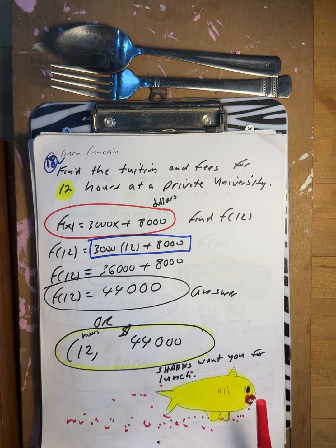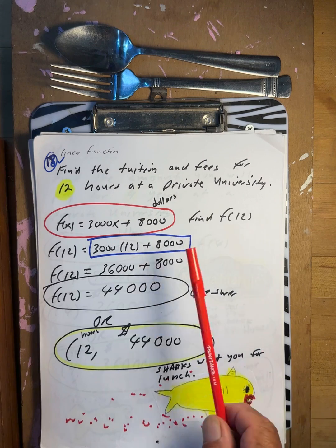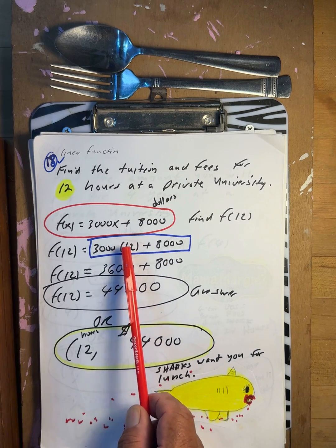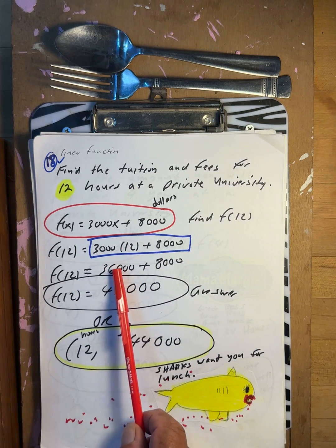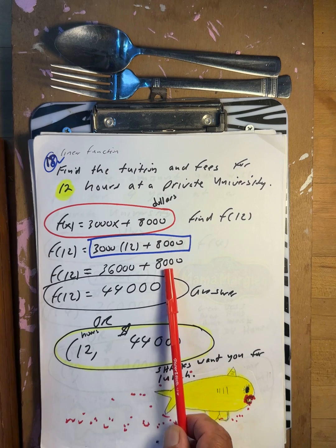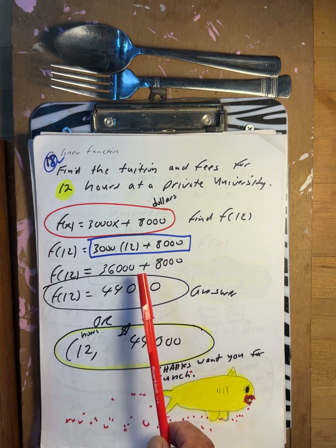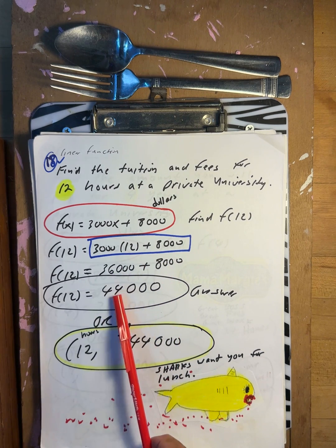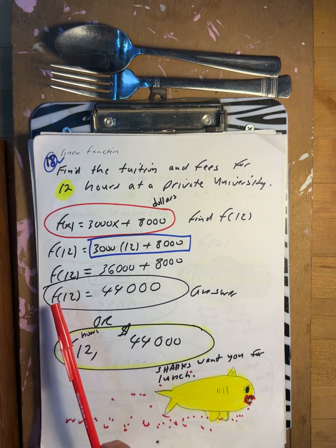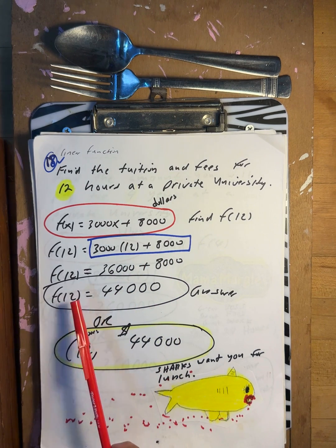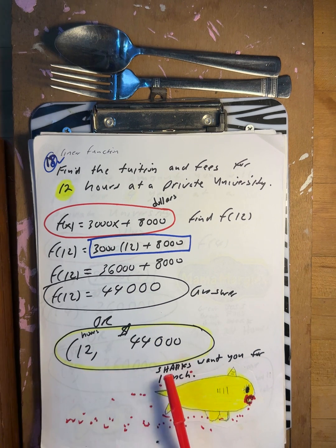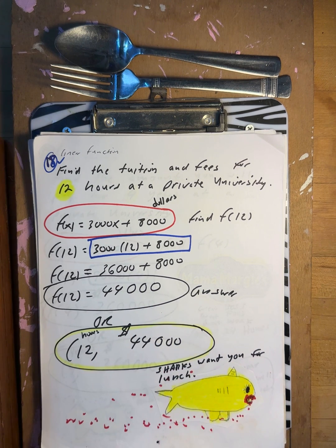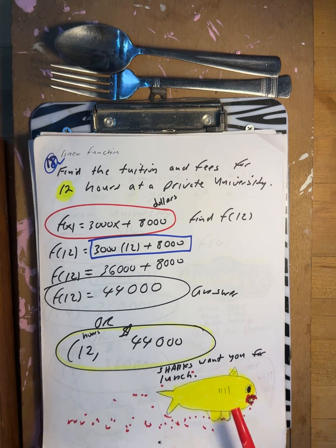Find tuition and fees for 12 hours at a private university. 12 times $3,000 is $36,000, plus fees gives $44,000. So f of 12 is $44,000 — 12 hours at a private university costs $44,000.